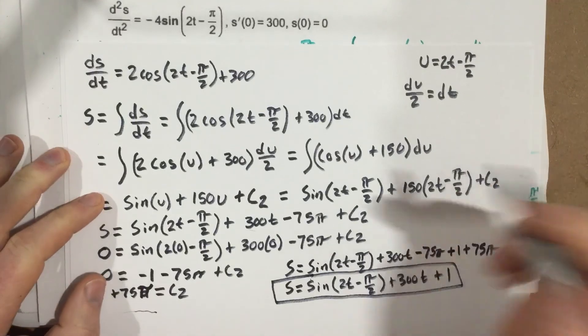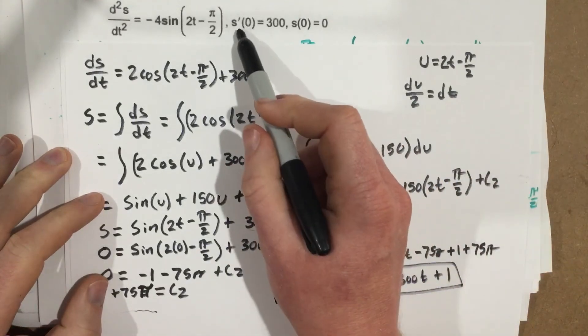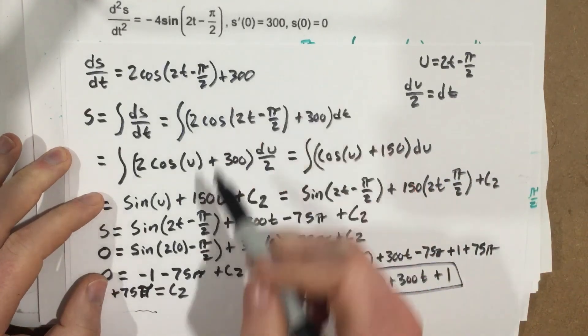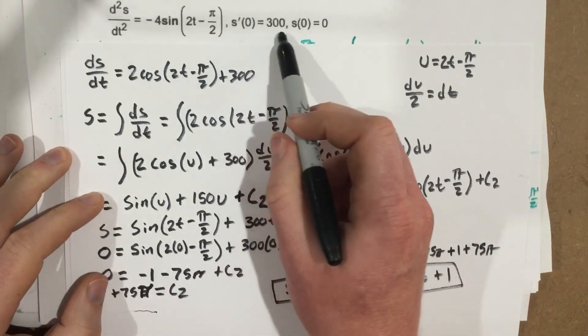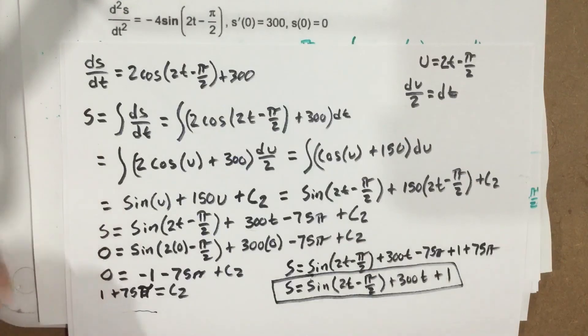They said to solve the following initial value problem — they wanted to know what the original function was. Using the information s'(0) equals 300 and s(0) equals 0, we found the original function s equals sine of 2t minus pi over 2 plus 300t plus 1.